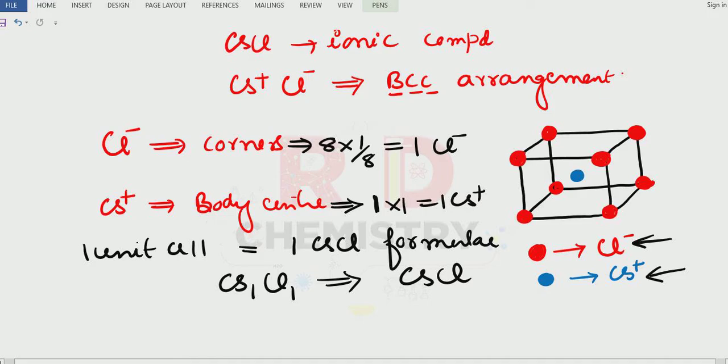Now you have to remember what is the coordination number of the cesium. Here blue colored one is surrounded by red color, eight chloride ions. Therefore coordination number of cesium+ is equal to eight. Means eight chlorides are surrounding it.